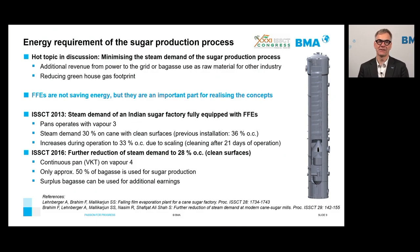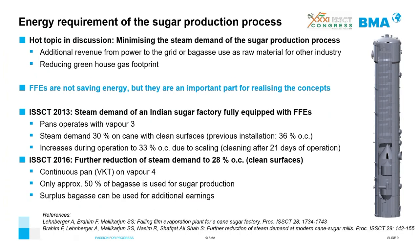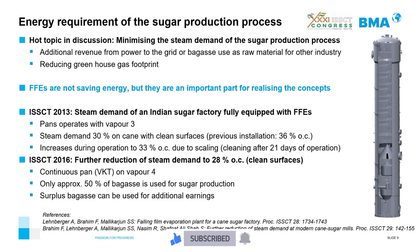Three years later, at the next IWSCT conference, we presented an upgrade of that plant: a continuous pan VKT started operation on vapor from effect 4. With that installation, steam demand was further reduced to 28% on cane — again with clean surfaces for comparison. At that time, only 50% of the bagasse was used for sugar production, and the surplus bagasse was used for additional earnings, especially for power generation and delivery to the grid.